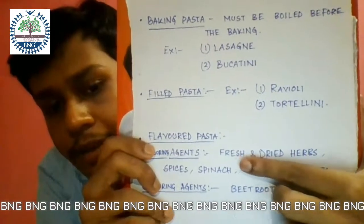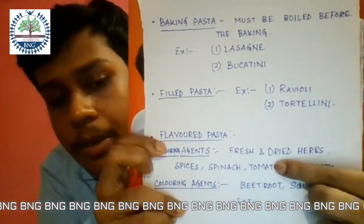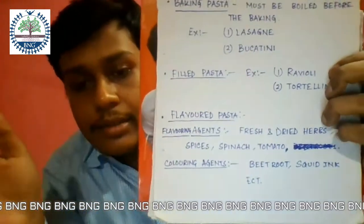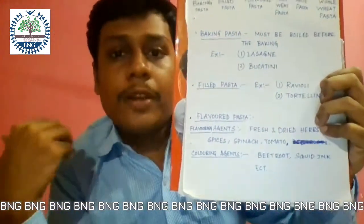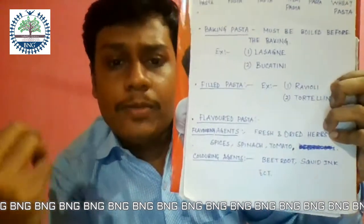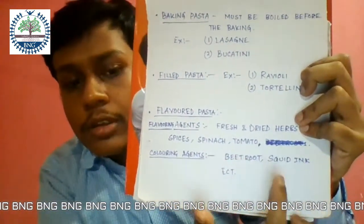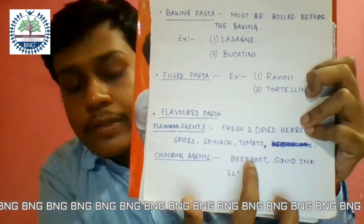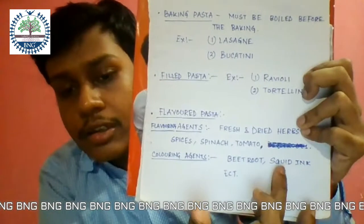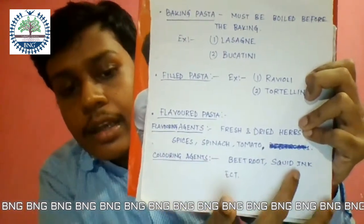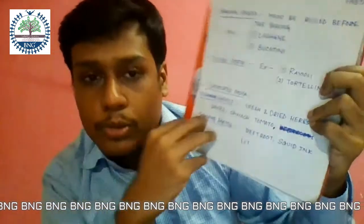Fresh and dried herbs, spices, spinach, tomatoes, etc. are used as flavouring agents. There are also colouring agents used for colouring flavoured pasta, like beetroot and squid ink. Beetroot gives a red colour, while squid ink is a traditional colouring agent that gives a black or sometimes dark blue colour.